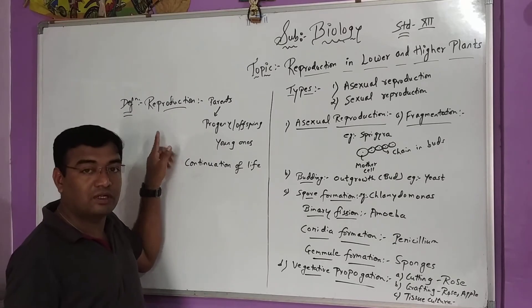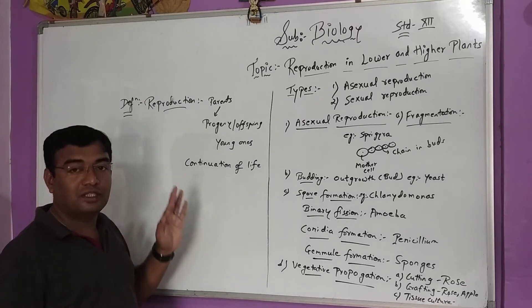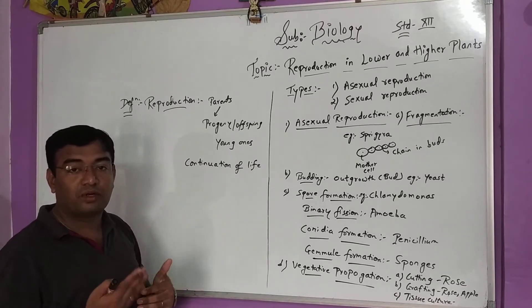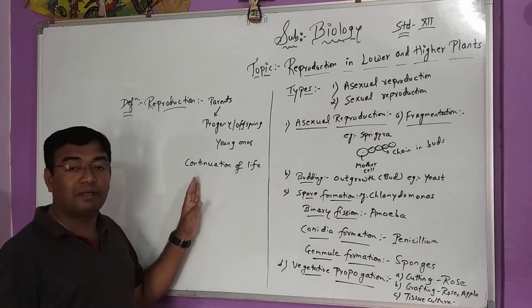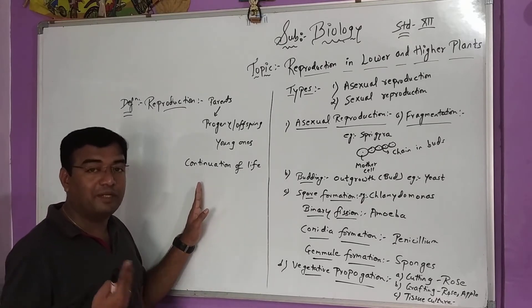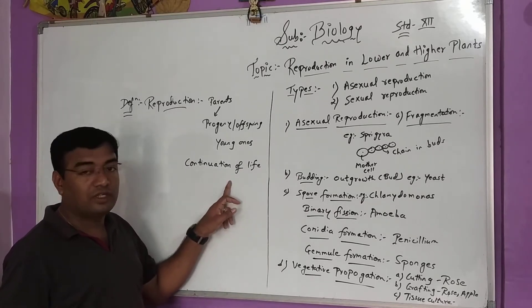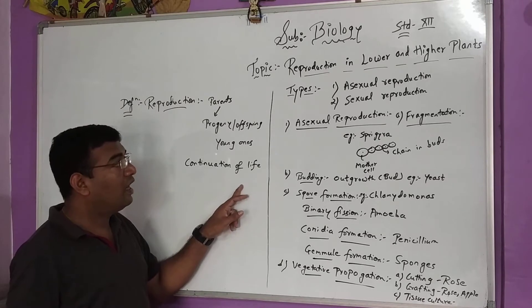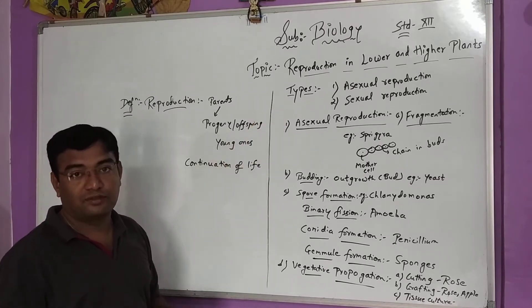You have understood the concept of reproduction. Reproduction is nothing but simply the production of offspring from the parents, or it is a method of multiplication for continuation of life. Now let us look at the types of reproduction.